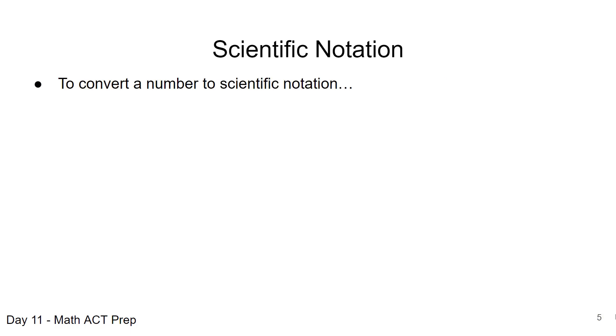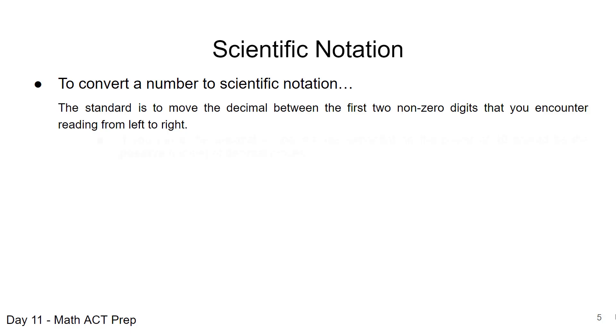Now, let's talk about how we can convert numbers to scientific notation. So the standard, and again, you may have seen this in a science class, is to move the decimal between the first two non-zero digits that you encounter when you're reading from left to right. So just like when we read a book from left to right, the first two non-zero digits is where we want to move the decimal point.